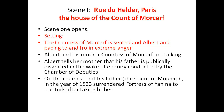Scene Number One opens in the apartment of the Count of Morcerf in the Rue du Helder, Paris. The Countess — that is, the mother of Albert — is seated, and Albert is passing to and fro in extreme anger. The question arises: why is Albert in extreme anger? Albert and his mother, the Countess of Morcerf, are talking. Albert tells his mother that his father is publicly disgraced.